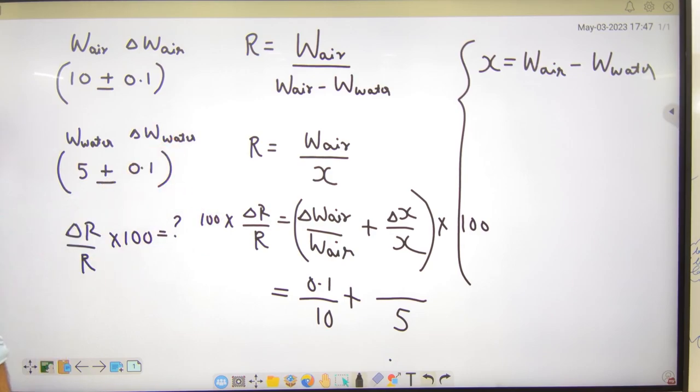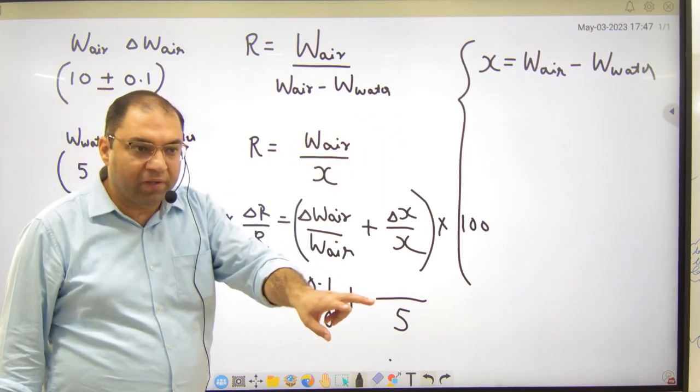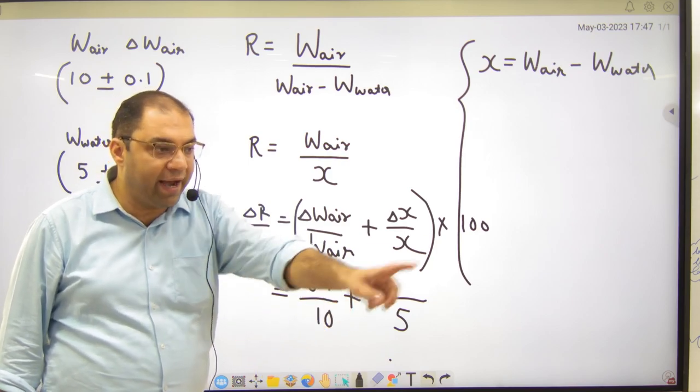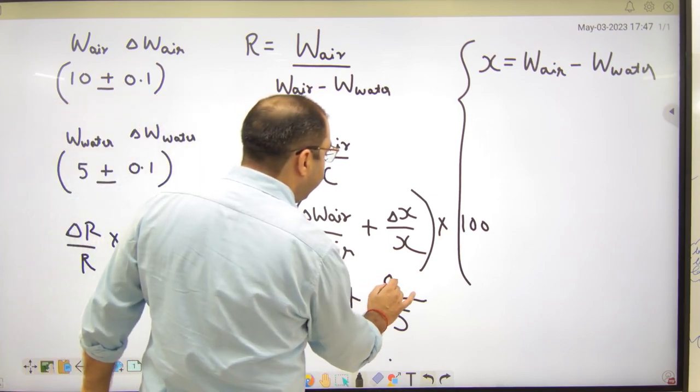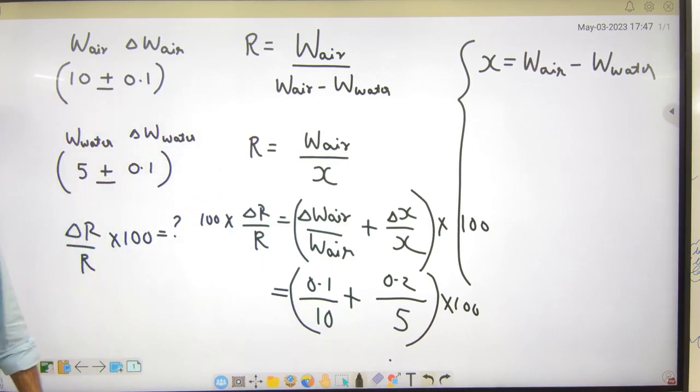Ab yeh batao ki delta x kya hai? Kyunki yeh do terms minus ho rhi hai. Humne kya discuss kiya tha? Errors inke add ho jayenge. To errors me kya hoga? Ismei point 1, point 1 kya hoga? Point 2 yeh lo. Into 100 solve karlo 5% hae ga. To point clear hai yaan tak ki ki kaise is question ko karna hai? Thik hai?